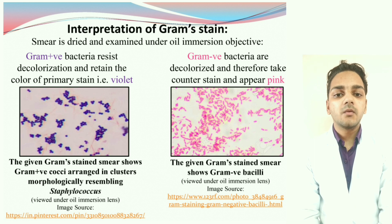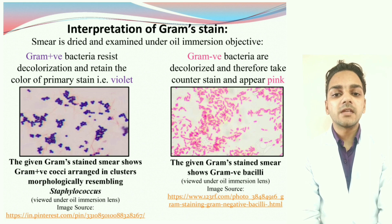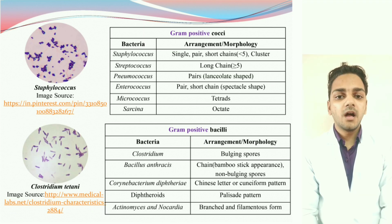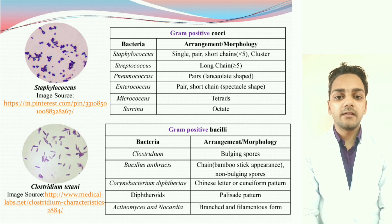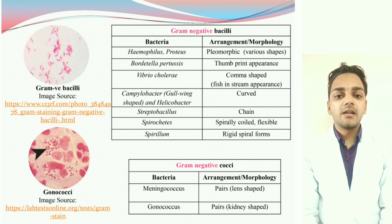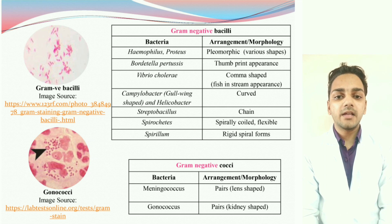In the right image, we can see Gram-negative bacilli, so we write: 'The given Gram stain smear shows Gram-negative bacilli.' In these tables, Gram-positive cocci and Gram-positive bacilli are arranged with their morphology and arrangement. Similarly, in these tables, Gram-negative bacilli and Gram-negative cocci are arranged with their morphology and arrangement, by observing which one can get an idea of their presence in the smear.